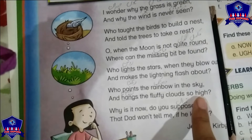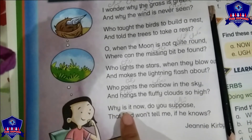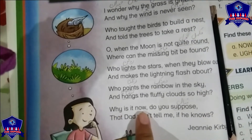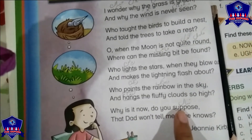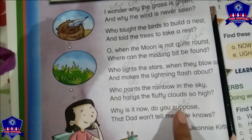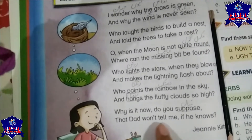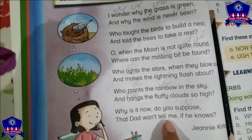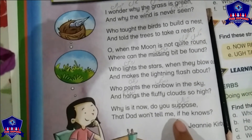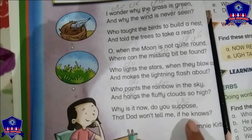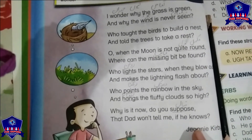'Why is it so, do you suppose, that dad won't tell me if he knows?' ایسا کیوں ہے — why is it so. کہ تمہیں کبھی خیال آیا — do you suppose. کہ والد مجھے نہیں بتائیں گے — that dad won't tell me. اگر وہ جانتے ہیں — if he knows.